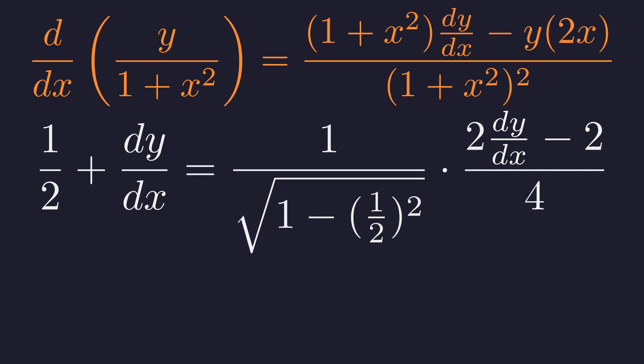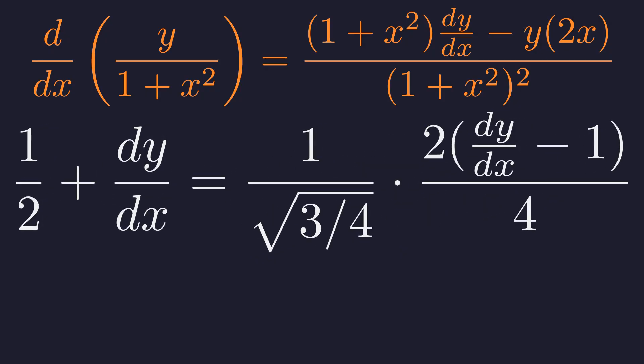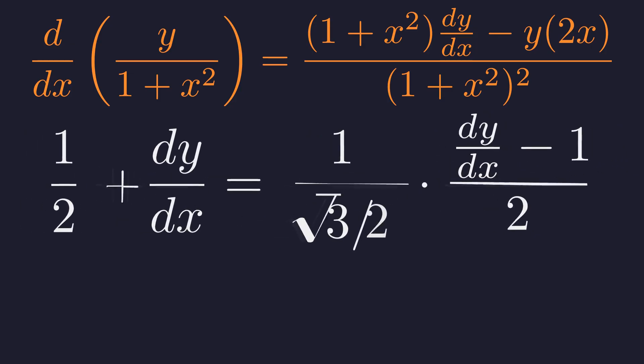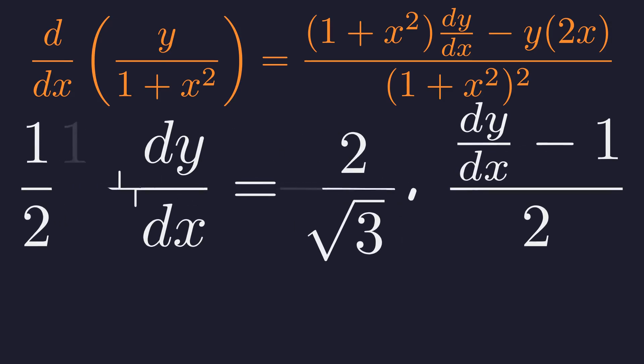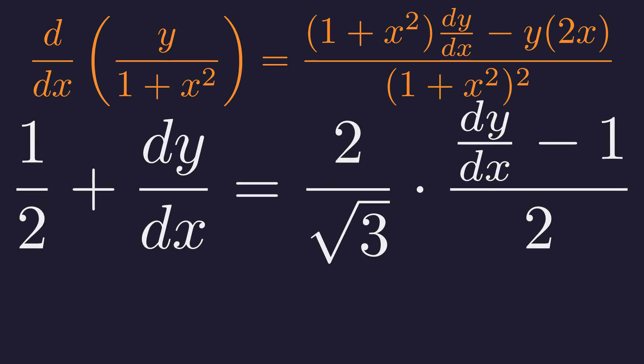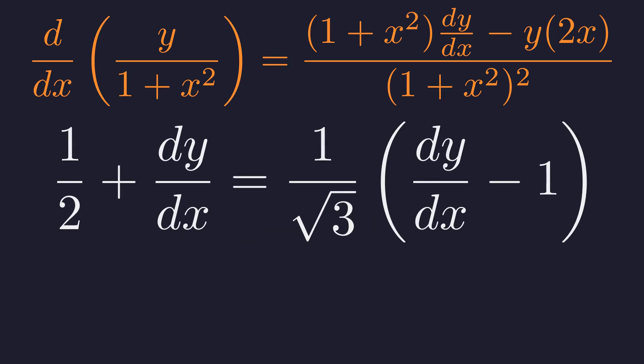Let's perform the arithmetic within the expression. 1 minus 1 fourth is 3 fourths. We can also factor a 2 from the numerator on the right. The square root of 3 fourths is the square root of 3 over 2. The reciprocal of the square root term flips it. And now we see that the 2s will cancel. We've reduced the complex derivative to a simple linear equation.